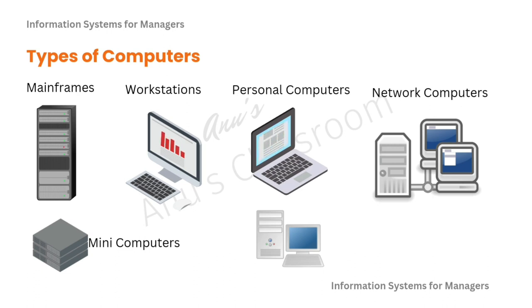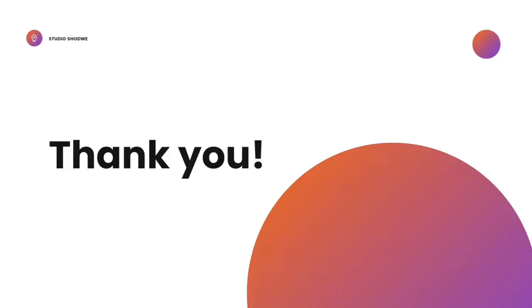Types of computers include mainframe computers, mini computers, workstations, personal computers — what most of us use — and network computers. Mainframes are used for large-scale processing, such as in big banks like SBI, and can hold and process large amounts of data. Workstations are high-performance personal computers, and network computers are designed for networking. That was it for this video — I hope you understood computer systems and smart devices, and I hope to see you in the next video. Bye!